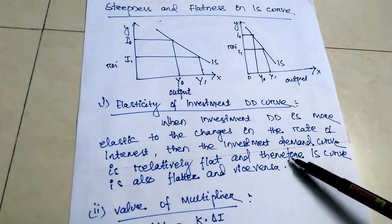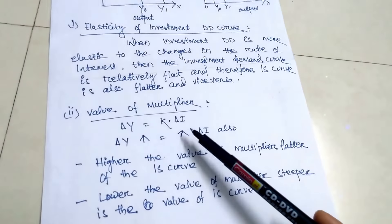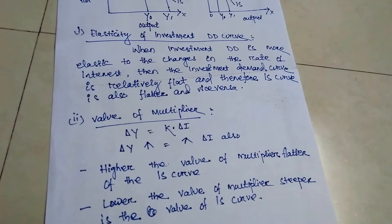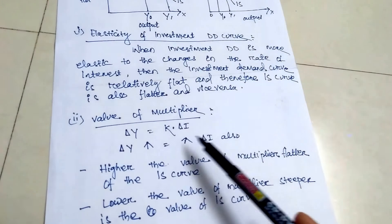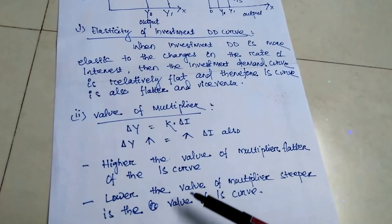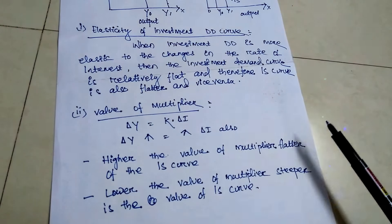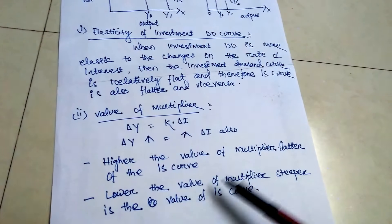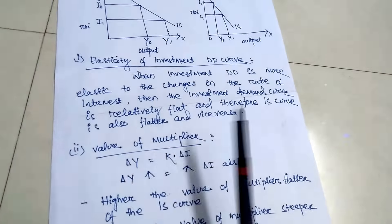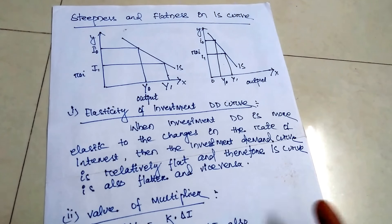The second reason is the value of the multiplier. When there is a change in income, delta Y equals K into delta I. Higher the value of the multiplier, the flatter the IS curve; lower the value of the multiplier, the steeper the IS curve. So there are two reasons: elasticity of investment demand and value of the multiplier.